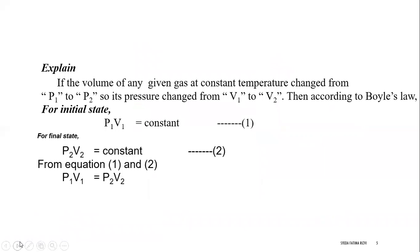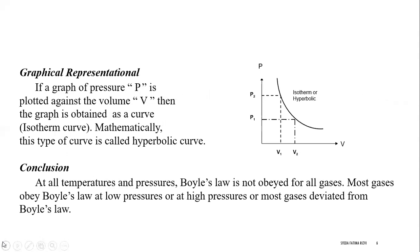In this explanation we consider initial and final conditions. Initially we have pressure and volume P1 V1, and finally P2 V2. We can also compare multiple conditions: P3 V3, P4 V4, and so on. This is Boyle's Law in initial and final form. The graphical representation shows a hyperbolic curve, called an isothermal curve because temperature is constant.